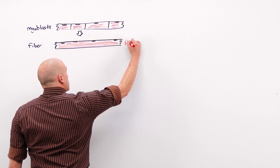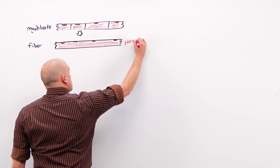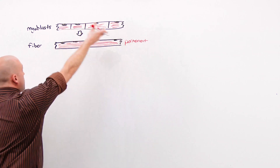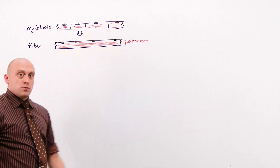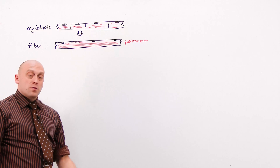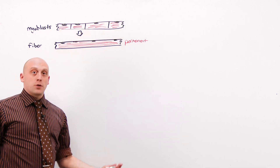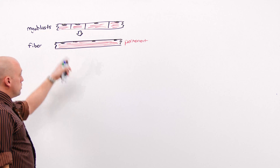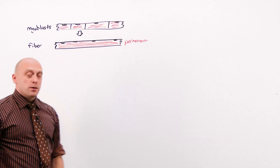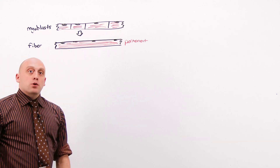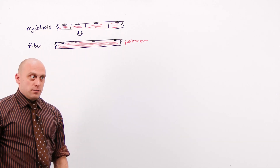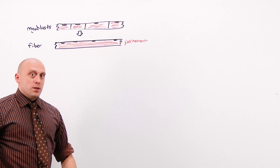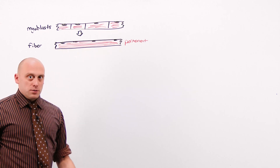These are permanent cells. You can see why — they don't have any myoblasts left to fuse together. So if they're injured, there's no getting them back. The only thing a muscle fiber can do is hypertrophy or atrophy — increase the amount of stuff, but not the number of cells.